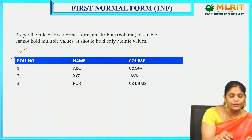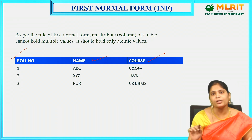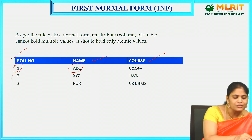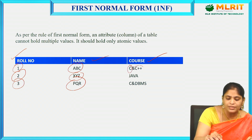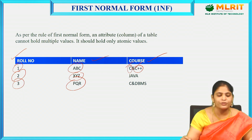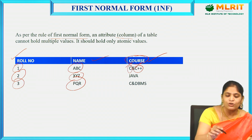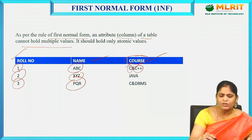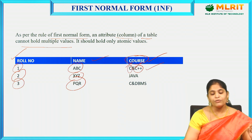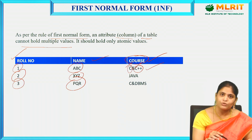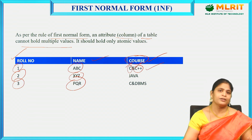Let us discuss this definition with an example. Here I have a table with three columns: roll number, name, and course. For roll number and name, we have only atomic — single — values. But for the column 'course,' we have multiple values; for example, C along with C++. As per the rule of 1NF, a column of a table cannot hold multiple values. So we need to reduce this by splitting or adding extra columns so that each column contains only atomic values.